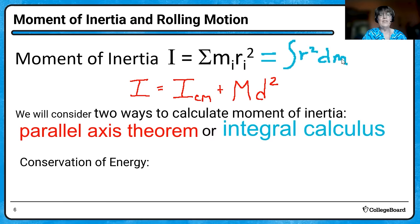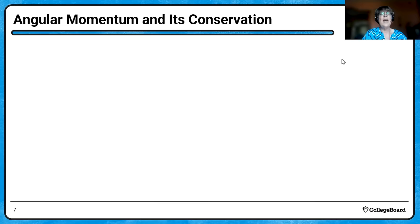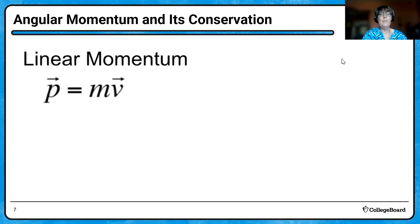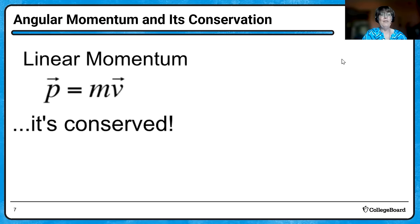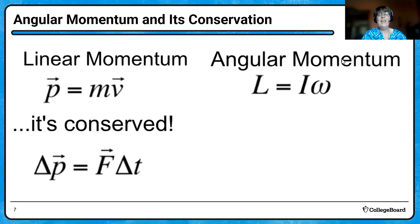We'll also look at the conservation of energy applied to objects rolling down inclines. Angular momentum — you remember linear momentum: P is MV. You can change momentum if you add an external force. Likewise, you have angular momentum, represented by large L, which equals I omega. Mass's rotational analog is the moment of inertia, and for linear velocity in the rotational world you have omega, the angular velocity. It's also conserved, but you can change it — this time it requires an external torque to change your angular momentum.